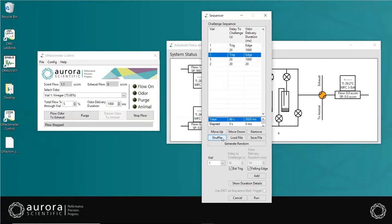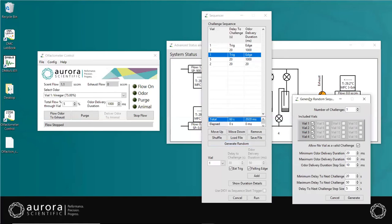If you'd like to generate a random sequence of odor challenges, select Generate Random, which will open the Random Sequence Generator. Here you can indicate the number of challenges. Select the vials to be included in the sequence, including no vials as an option. Then set the minimum and maximum durations and delays the program can use to generate the sequence, as well as the step size. Once satisfied, select Generate and the program will generate a random sequence of challenges.